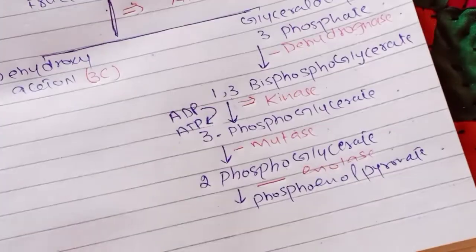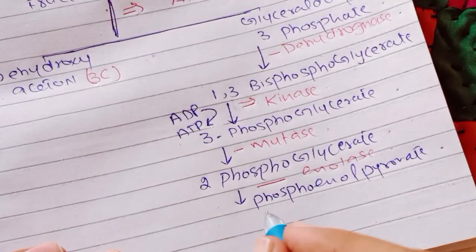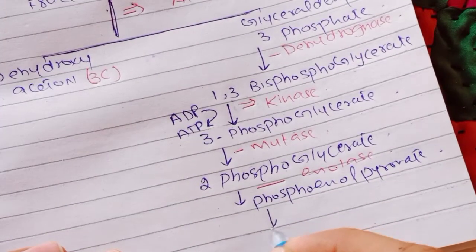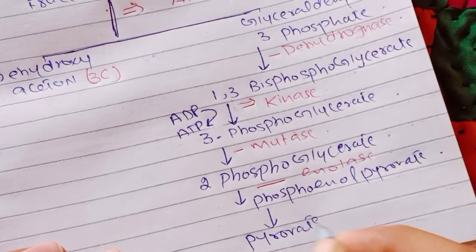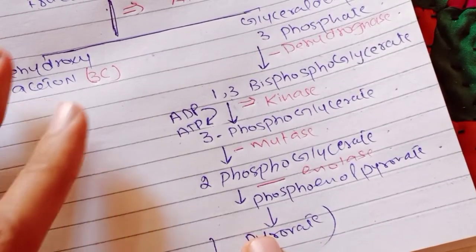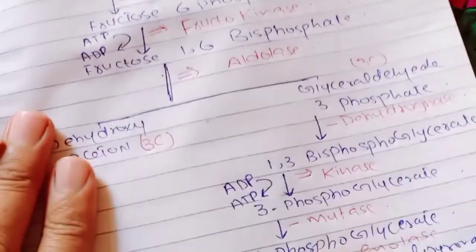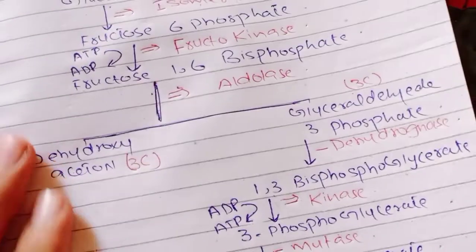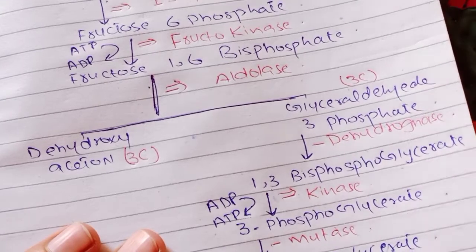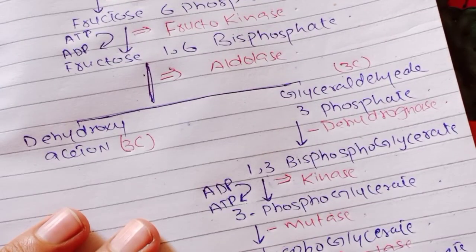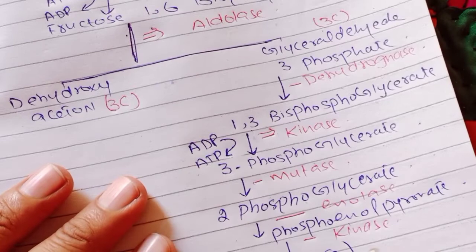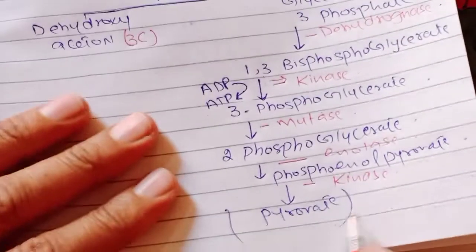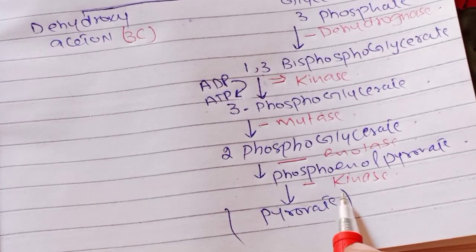Phosphoenolpyruvate will finally be converted into pyruvate. This step is catalyzed by the enzyme starting with K — that is called Pyruvate Kinase. Glycolysis ends here.